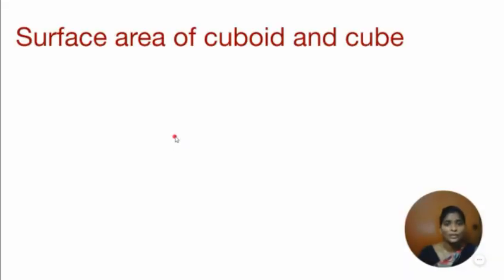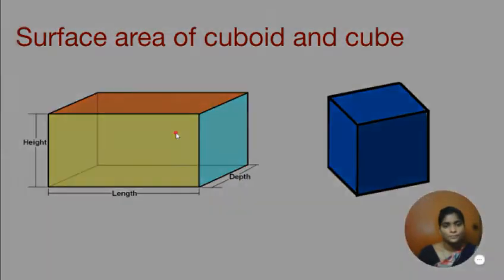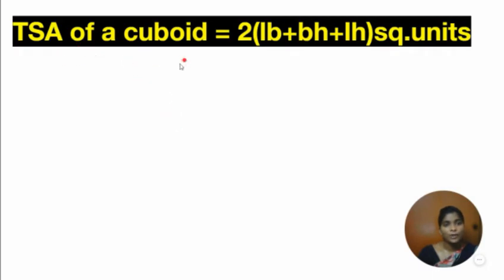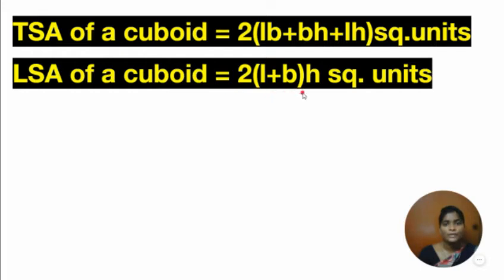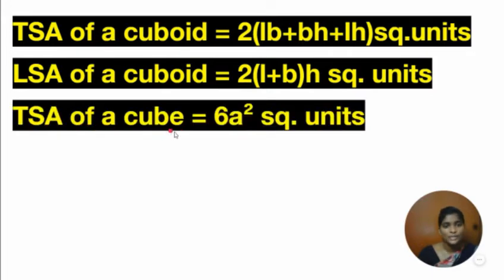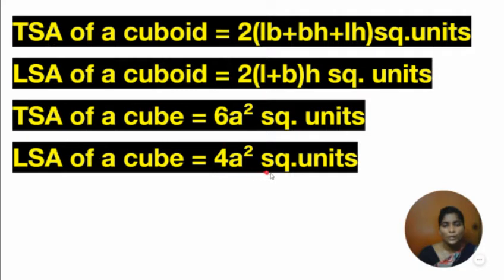Next, we move on to surface area of a cuboid and cube. TSA of a cuboid is equal to 2 into (LB plus BH plus LH) square units. LSA of a cuboid is equal to 2 into (L plus B) into H square units. TSA of a cube is equal to 6A square square units, and lateral surface area of a cube is equal to 4A square square units.